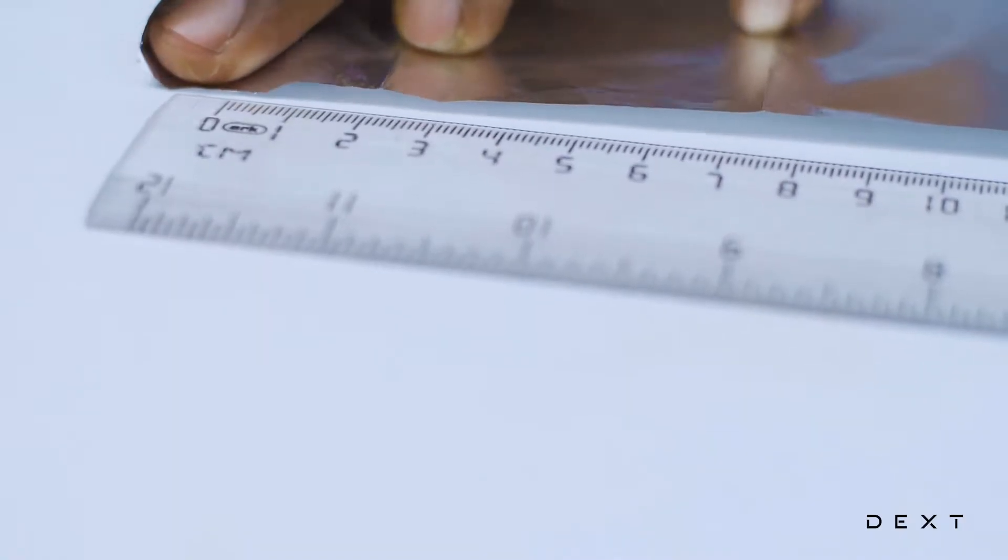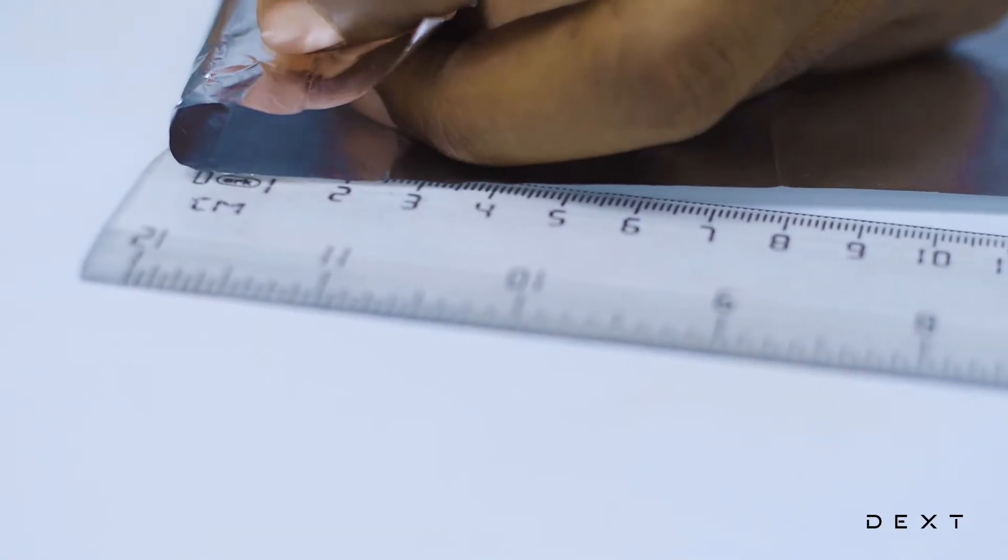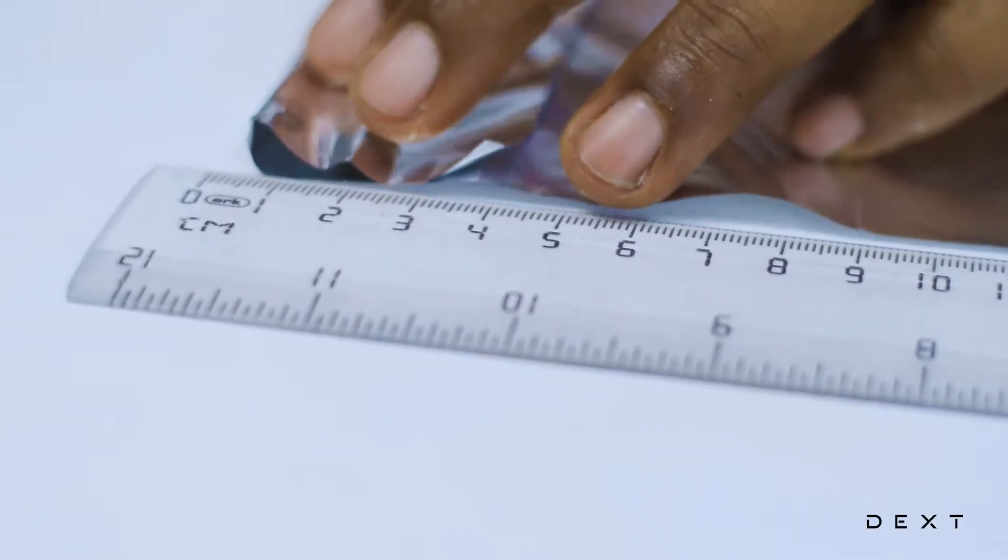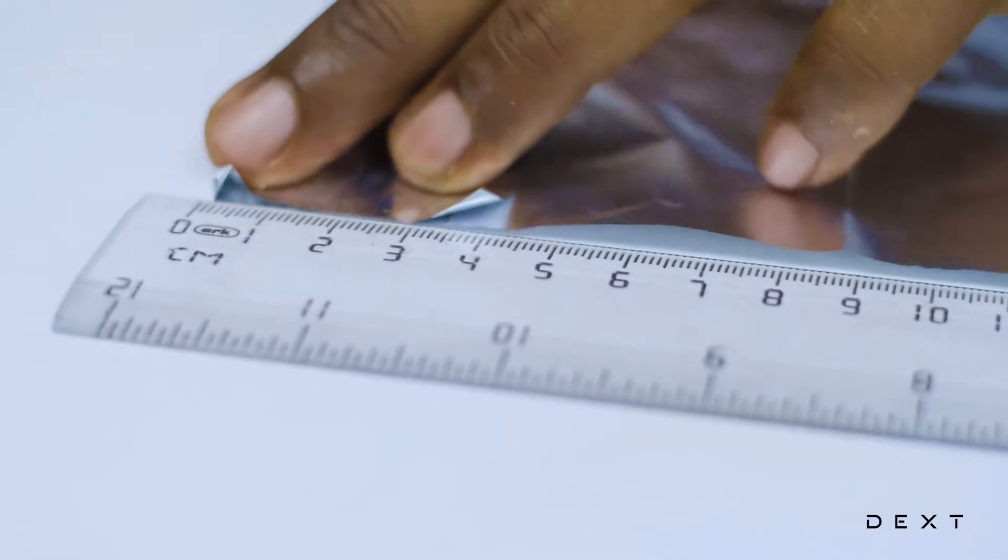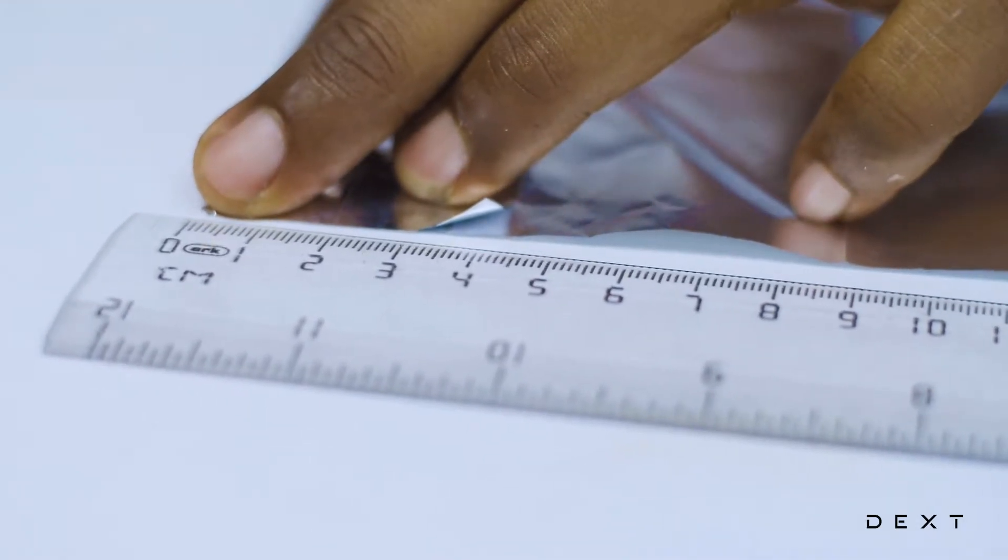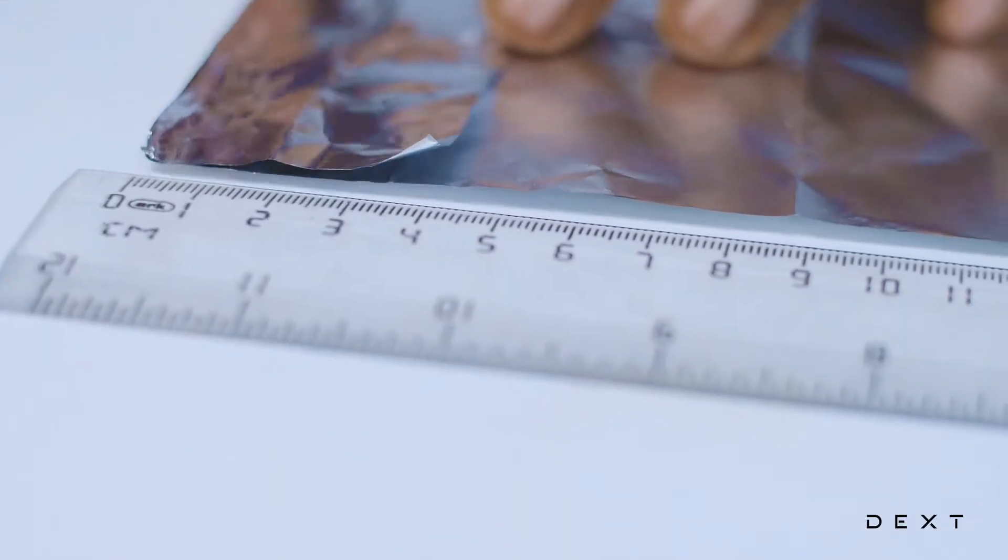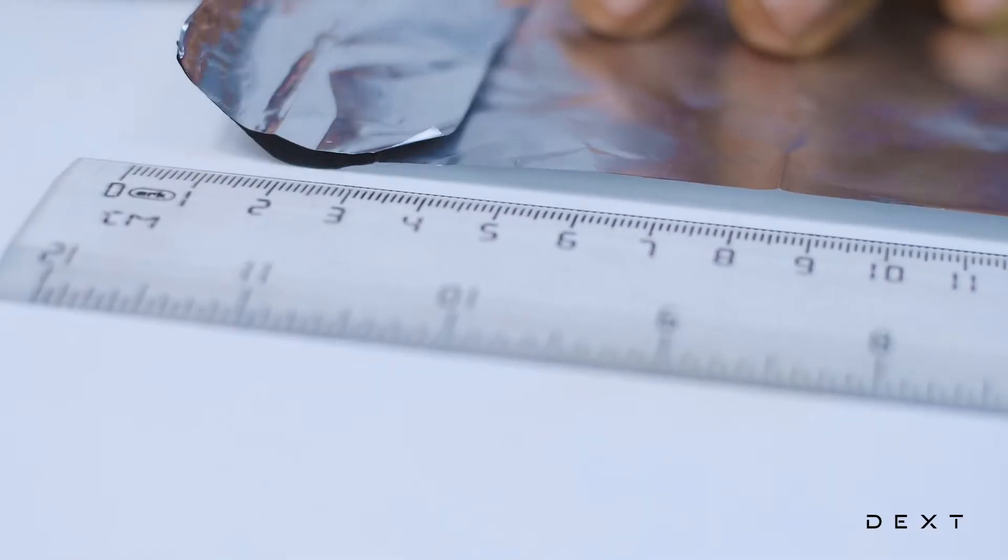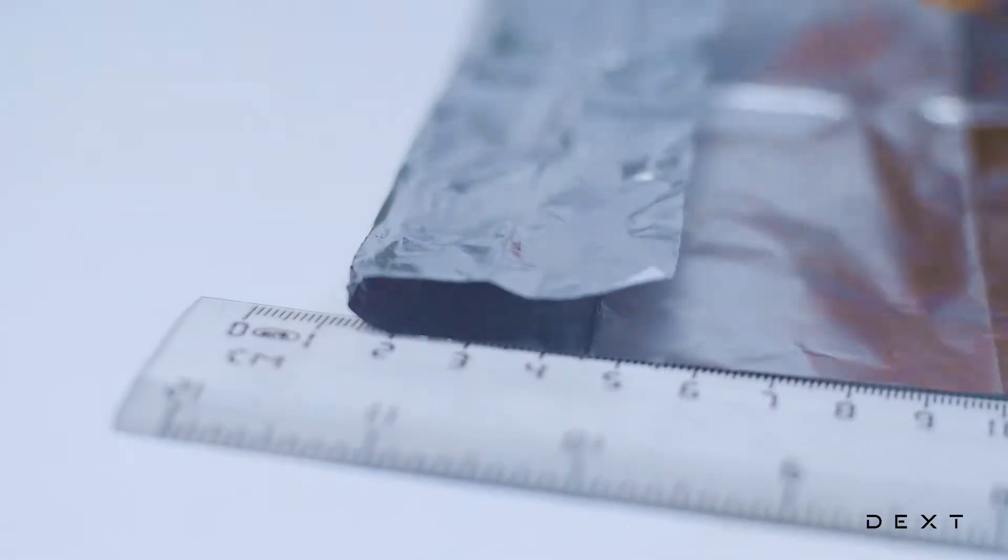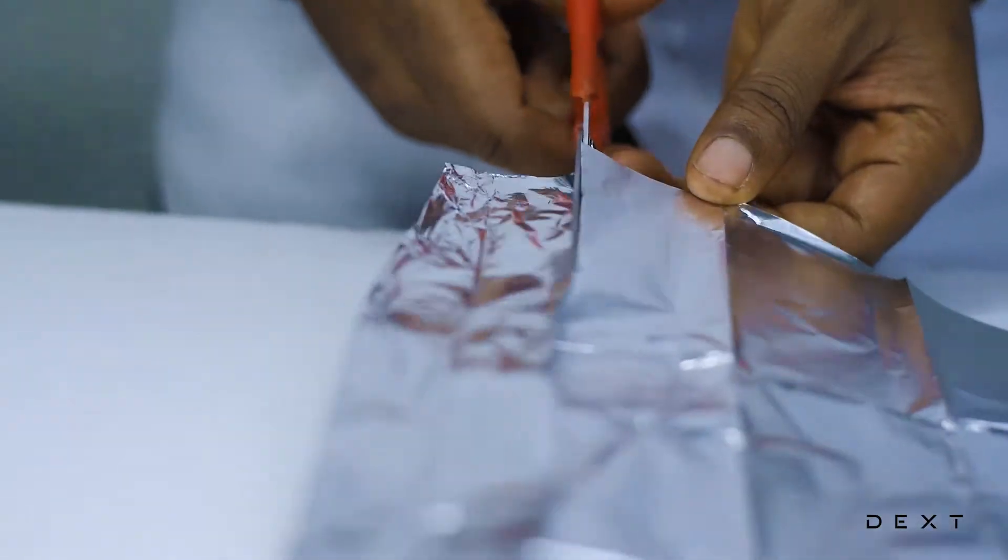So let's go ahead and fix that. Let's reduce the point where we fold the aluminum foil, just so that is about the 4 cm mark that we want. Nice. We are going to go ahead and fold it right there, and then cut it right there.